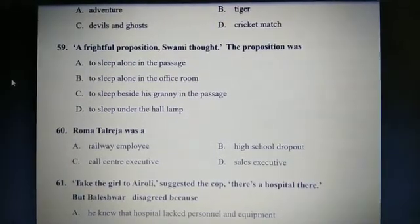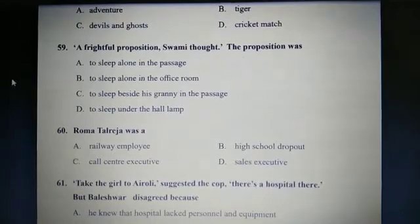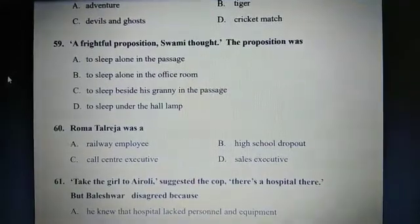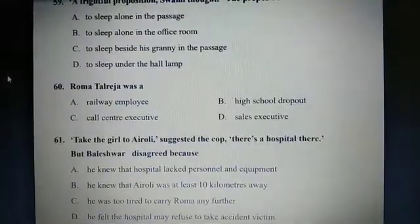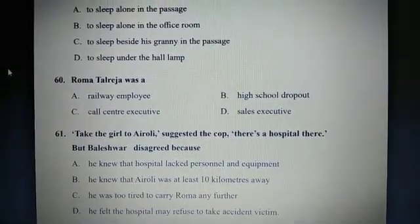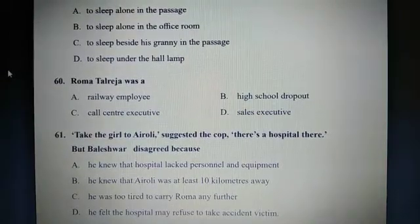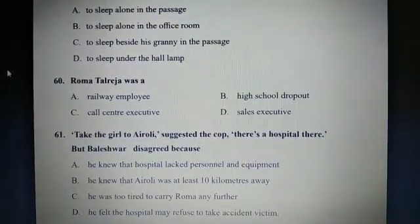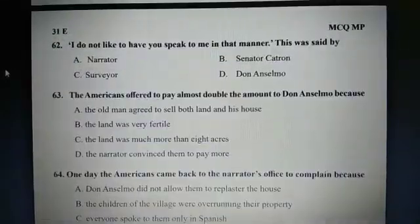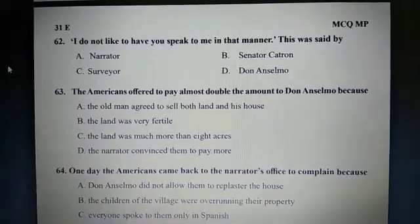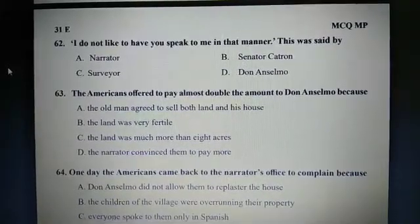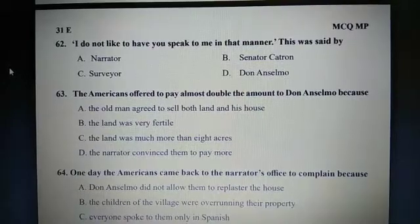Question 60: Roma Thaleraja was a C: Call center executive. Question 61: Take the girl to Airoli, suggested the cop. There is a hospital there. But Baleshwar disagreed because B: He knew that Airoli was at least 10 kilometers away. Question 62: I do not like to have you speak to me in that manner. This was said by D: Don Anselmo.